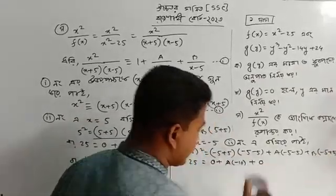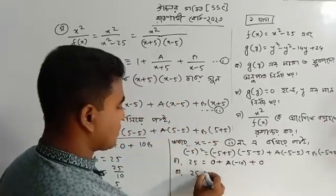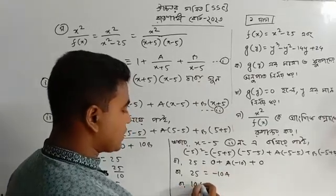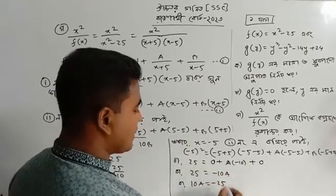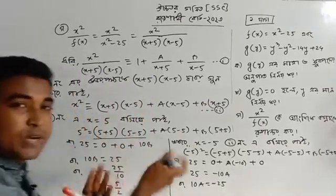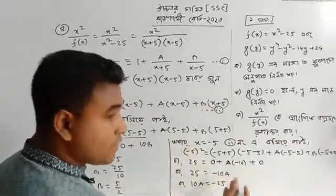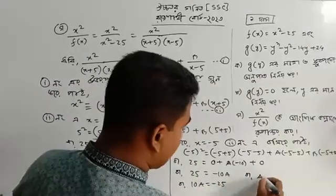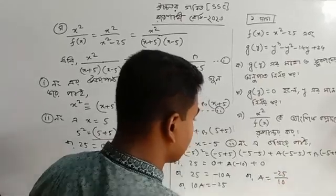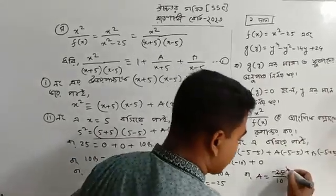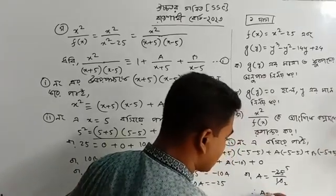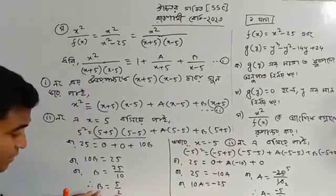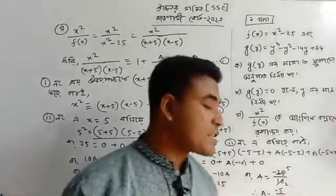That means 10 A equal to minus 25, so A equal to minus 25 by 10, which simplifies to minus 5 by 2. So B equals 5 by 2 and A equals minus 5 by 2.